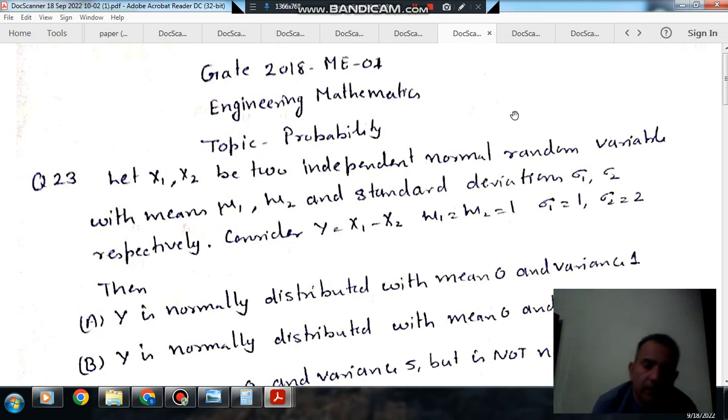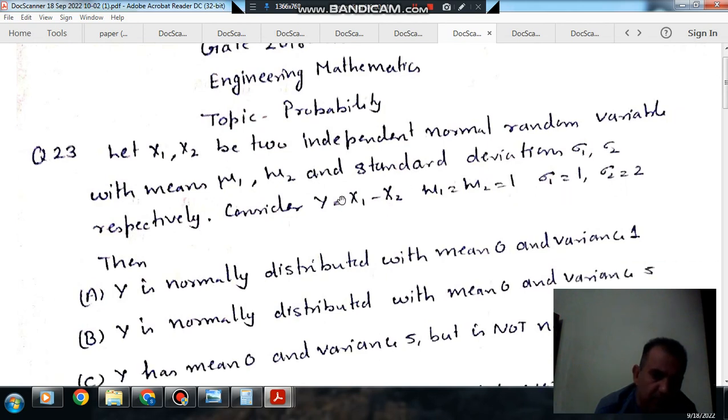Question number 23 from GATE 2018 ME-01: Let x1, x2 be two independent normal random variables with means mu1 and mu2 and standard deviations sigma1 and sigma2 respectively.